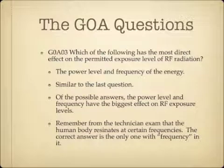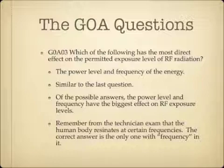Which of the following has the most direct effect on the permitted exposure level of RF radiation? The answer is the power level and the frequency of the energy. This goes in the same theme as the last question. Of the possible answers, the power level and frequency have the biggest effect on RF exposure levels. Remember that the human body resonates at certain frequencies. The correct answer is the only one with frequency in it, so that might help you get the right answer.